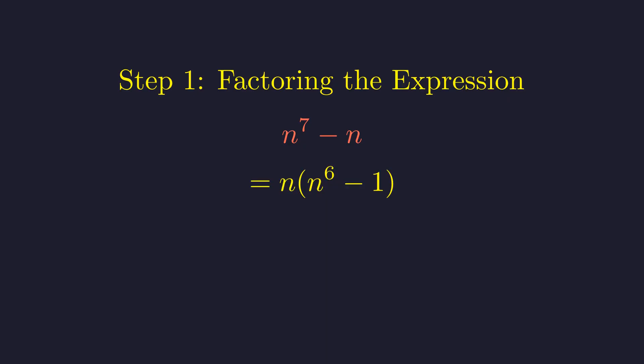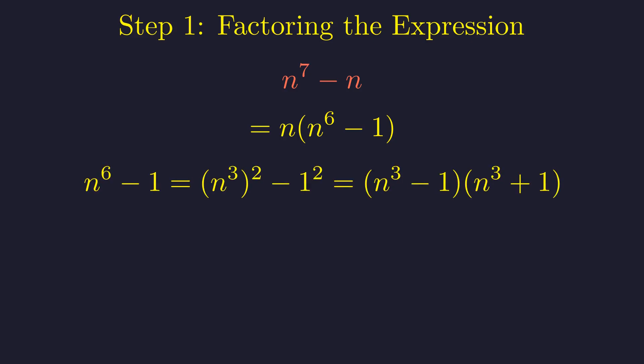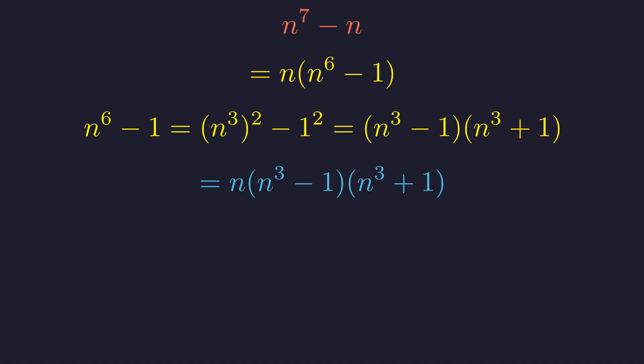Now, n^6 - 1 might look intimidating, but it's actually a difference of squares in disguise. Think of it as (n^3)^2 - 1^2. The difference of squares pattern tells us that a^2 - b^2 factors as (a - b)(a + b). So our expression becomes n(n^3 - 1)(n^3 + 1). Beautiful!